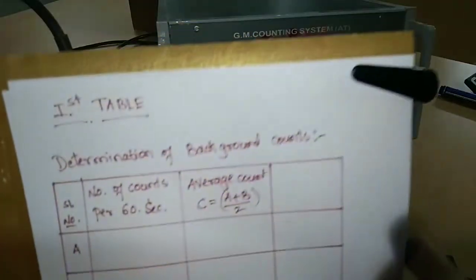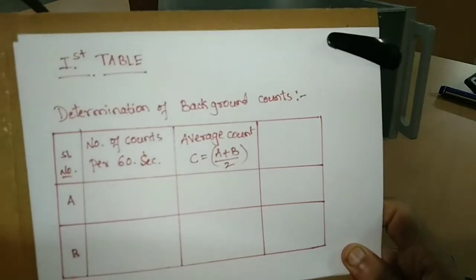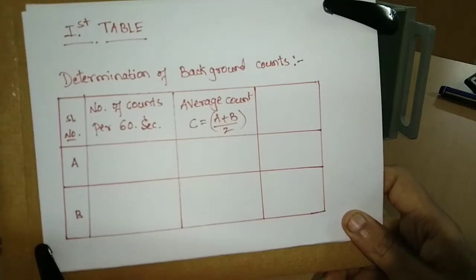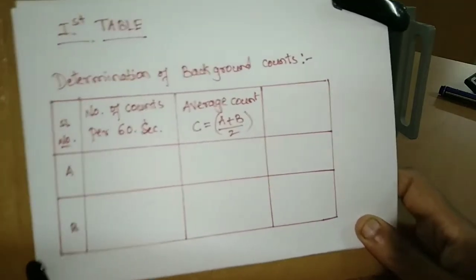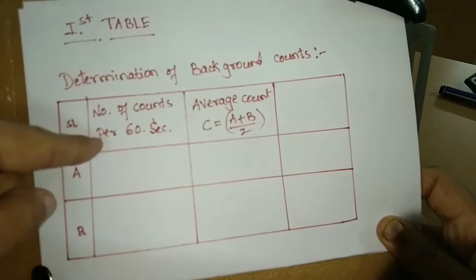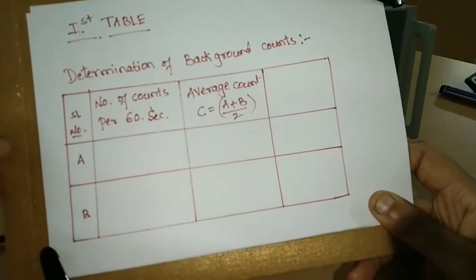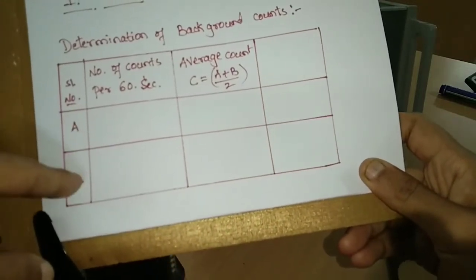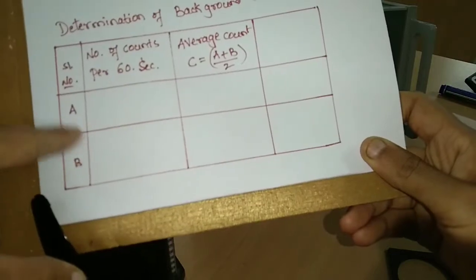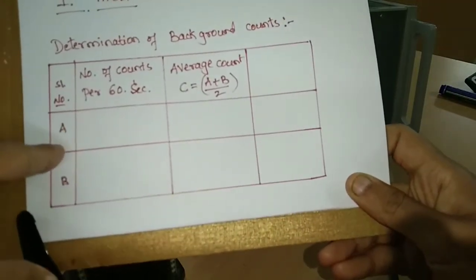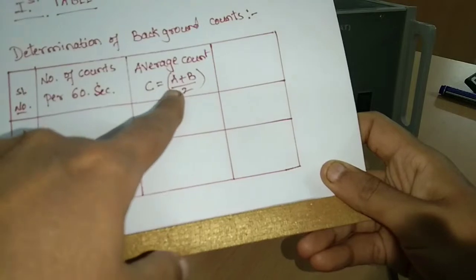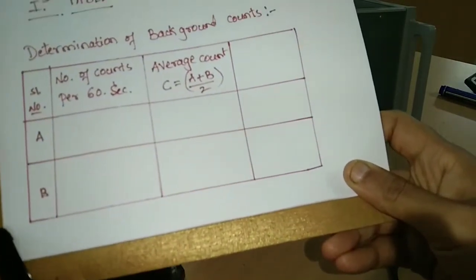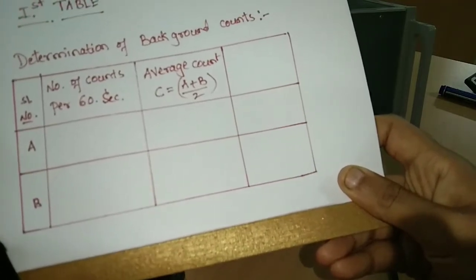Now move to the first table: determination of background counts. This table records the number of counts per 60 seconds and the average counts, C = (A + B) / 2. We take two readings; if taking a single reading, there is no need to calculate the average.